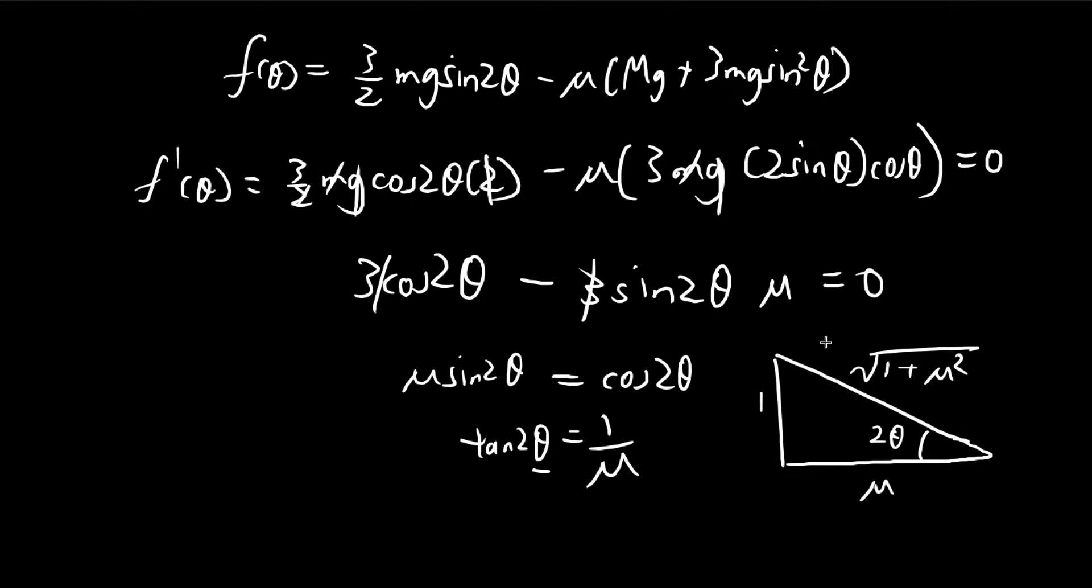And then we're going to substitute our 2 theta inside. So we know that our 2 theta corresponds to this triangle. So sine 2 theta is 1 divided by this.